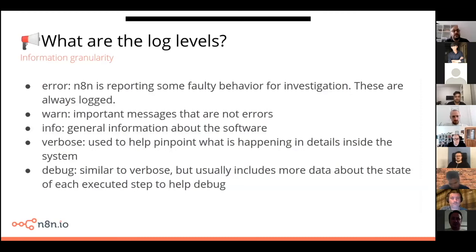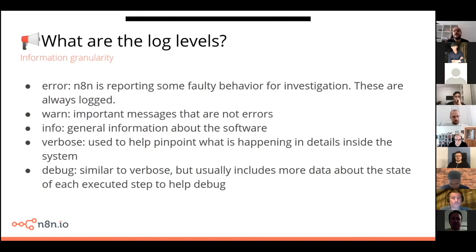What are the log levels? Error is the first and most critical — it means n8n is reporting some faulty behavior, something went wrong. Those messages are always logged, and if you don't change any settings, you will see those in your terminal. The second level is warn, which is an important message but not necessarily an error — for example, a library that is deprecated, or a note that needs updating. Those are messages that need your attention.